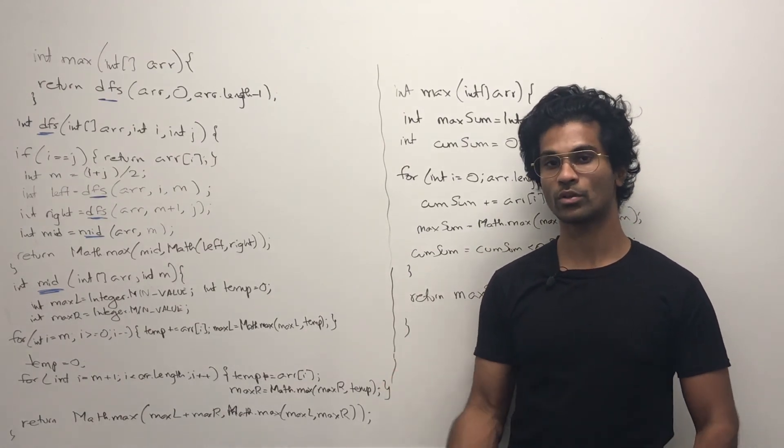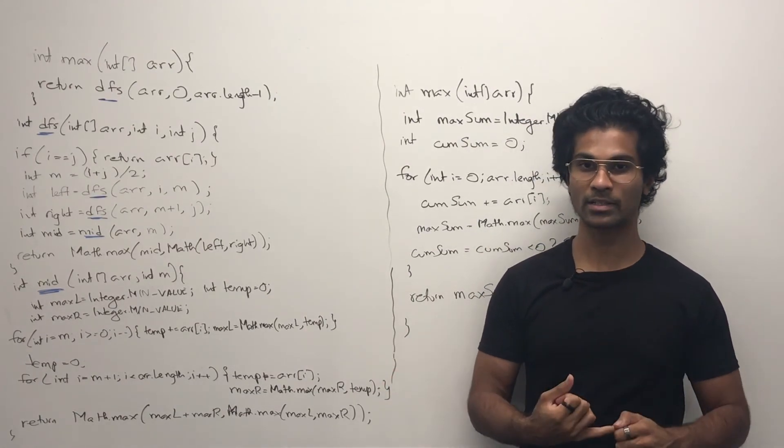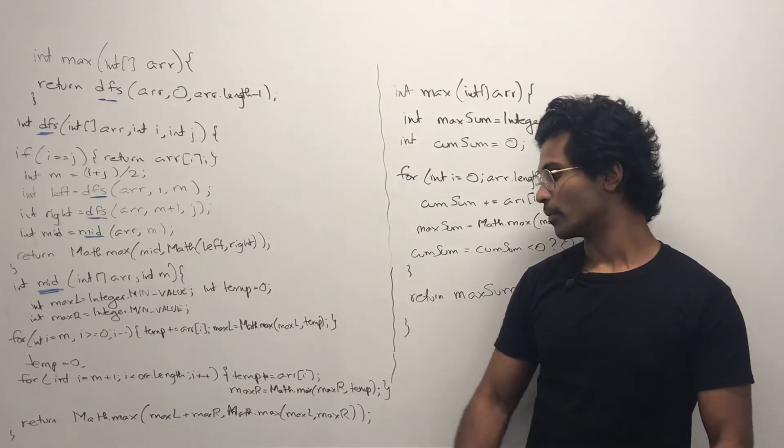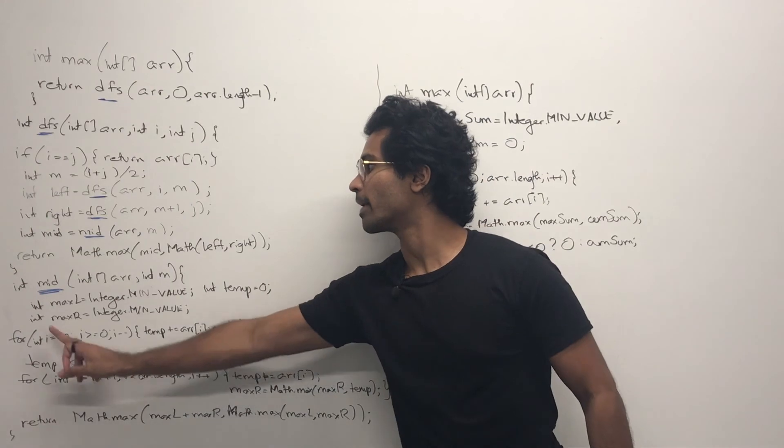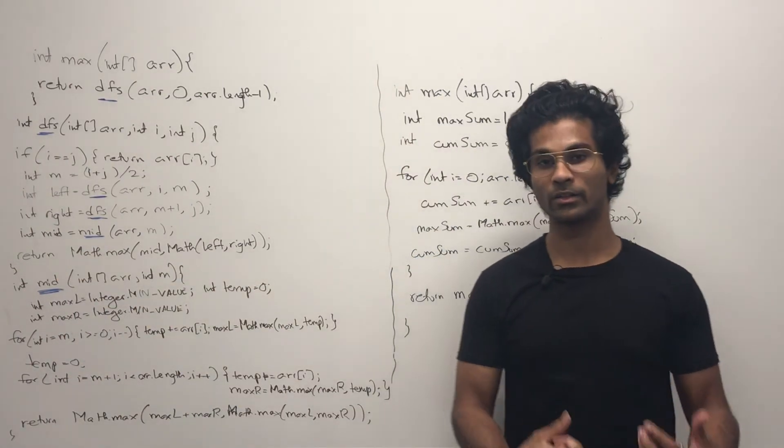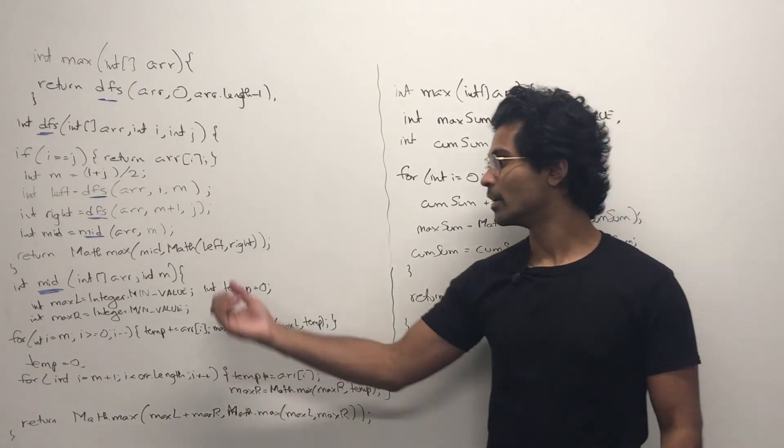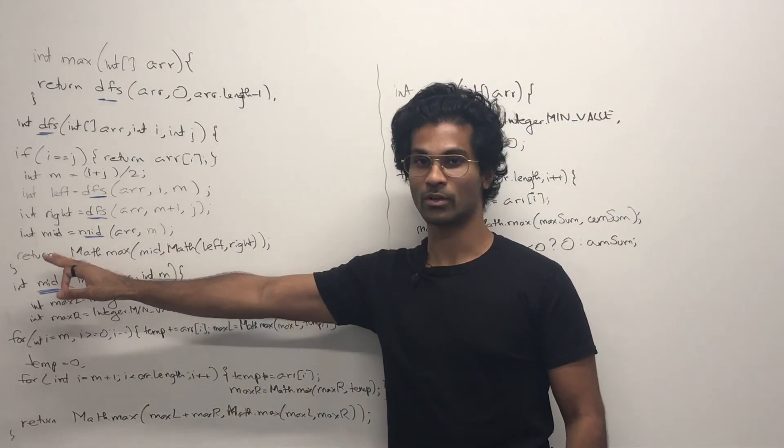And before we return the result, we take either the maximum of max at maxL, maxR, or we take the sum, and that's how we get back our mid. Finally, after we get our recursive stacks and our midpoint call back, we see which one of these is going to be the biggest, and then we return.